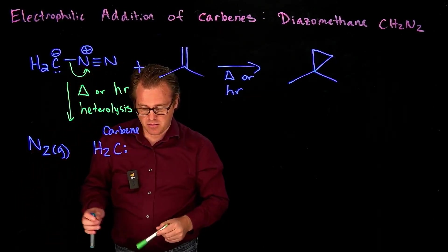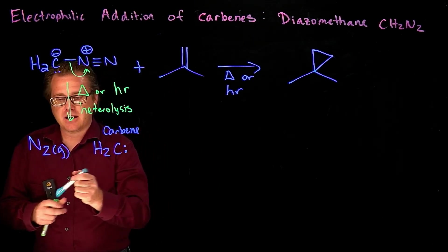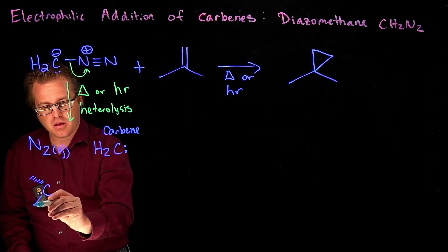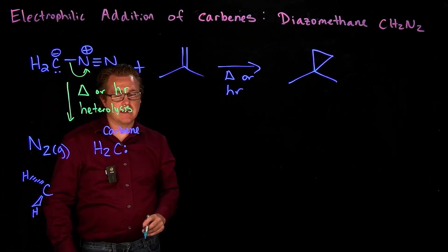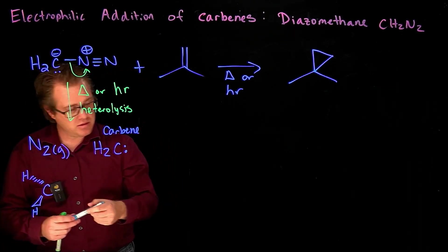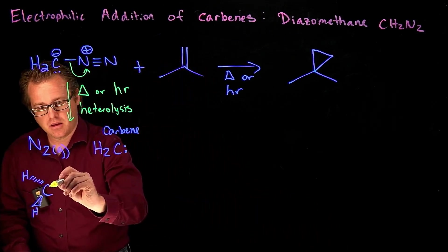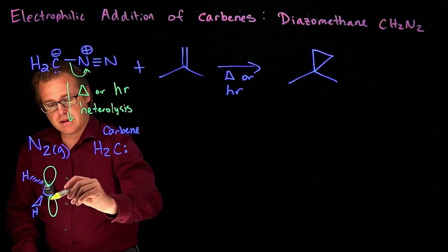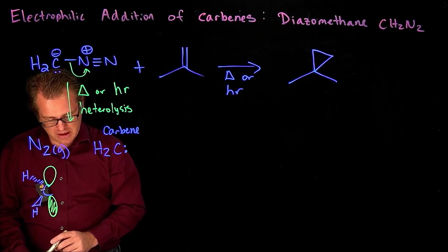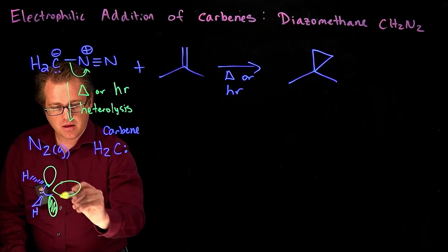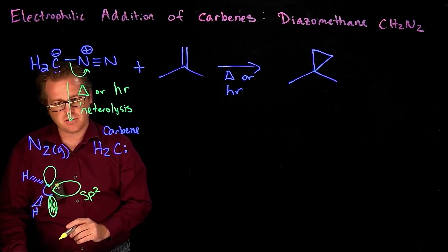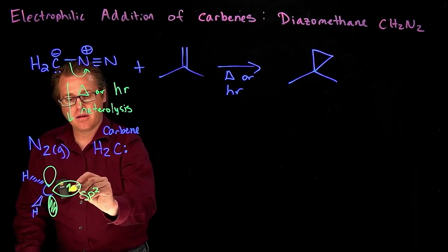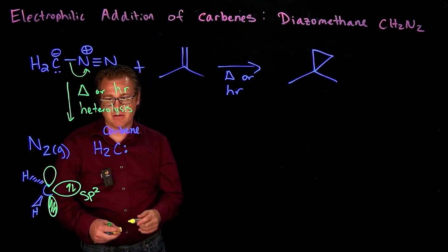Now if we expand that out a little bit more, what we're going to see is that that carbon right here, if we take a closer look at this, we're going to have a p-orbital right here, I'll draw a p-orbital there, like so. And so that has phase to it. And then we're going to have an sp2 orbital right there.